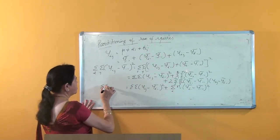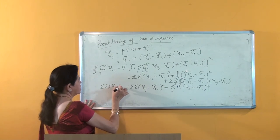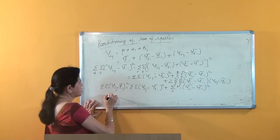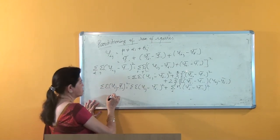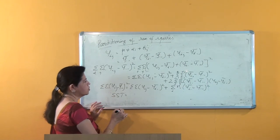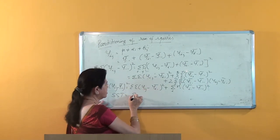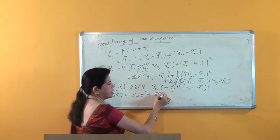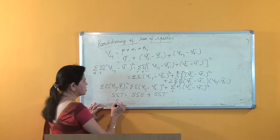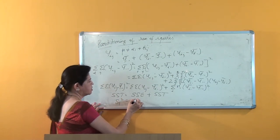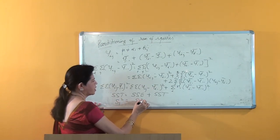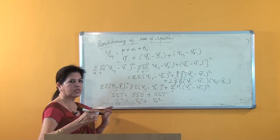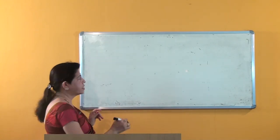So we have double summation of (y_ij minus y double-dot bar) whole squared equal to the two remaining terms. This is the total sum of squares, denoted SST, equal to the sum of squares due to error (SSE) plus the sum of squares due to treatment (SStr). In other words, SS_Total equals SS_Error plus SS_Treatment. This is how we partition the various sums of squares.